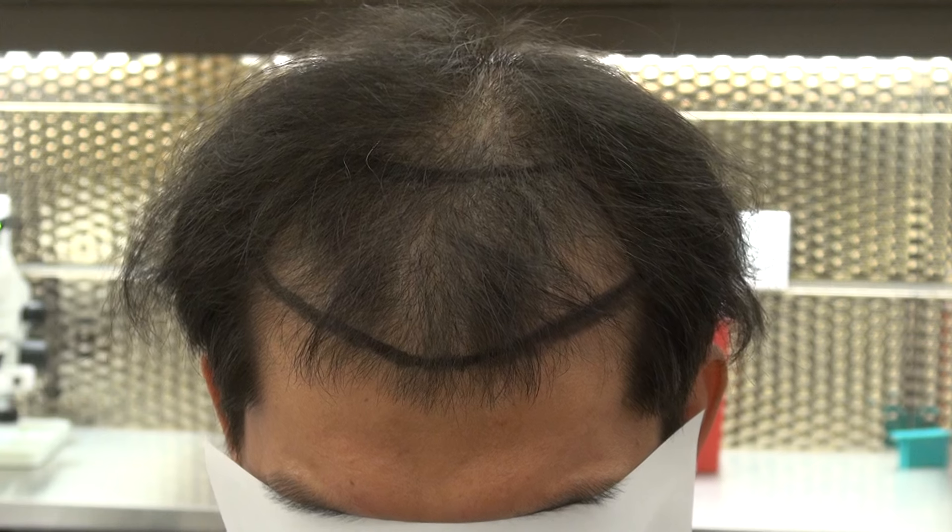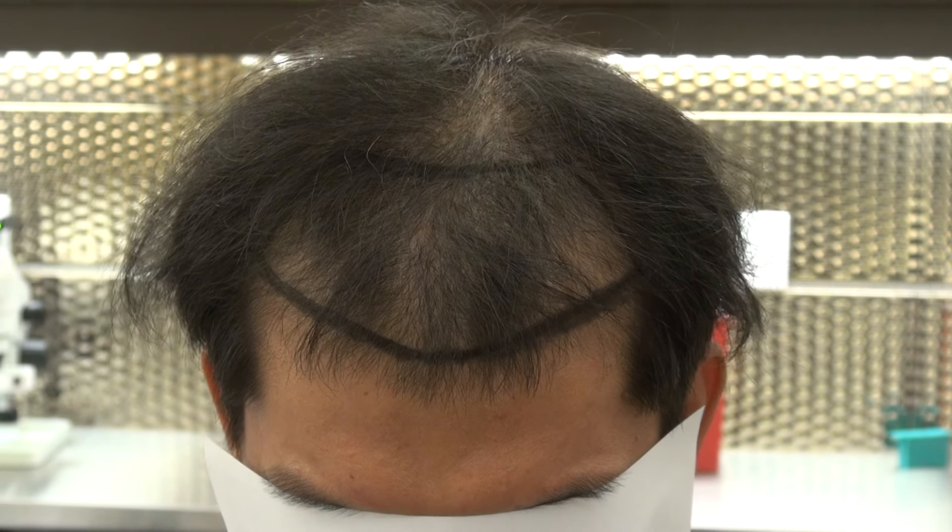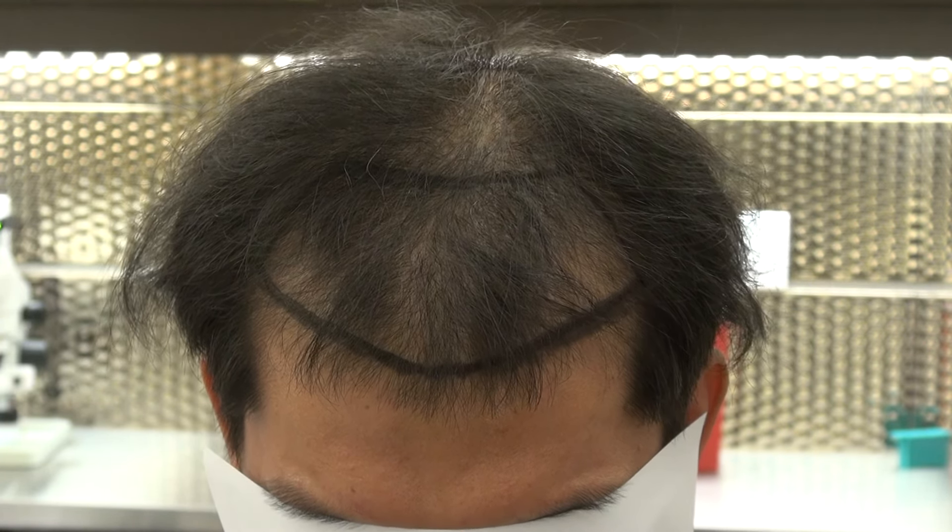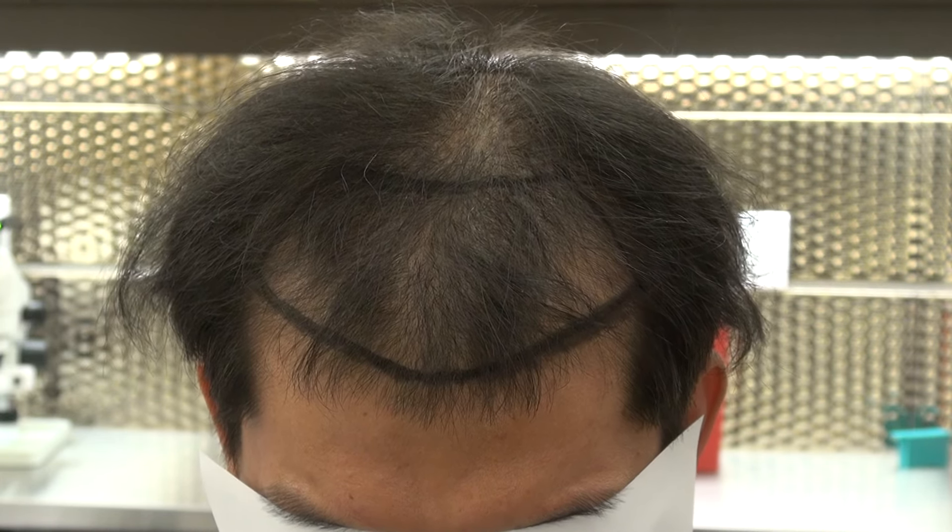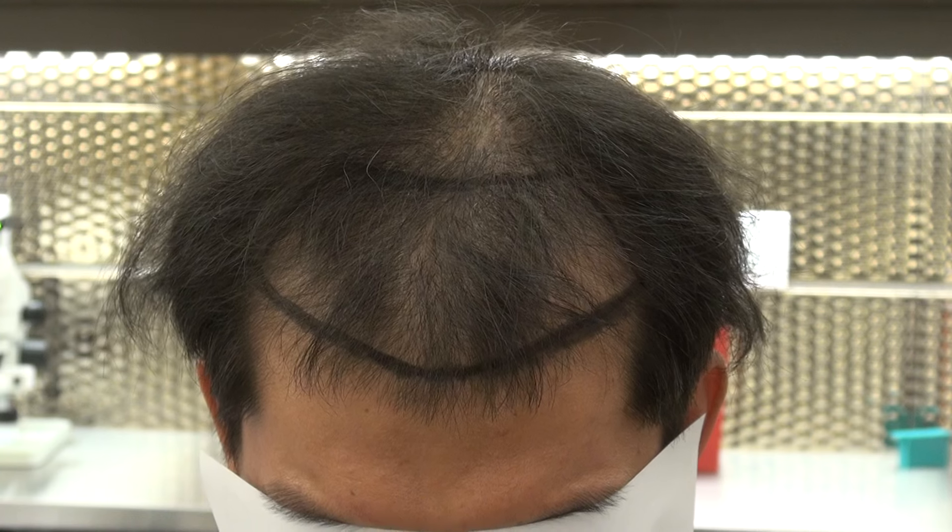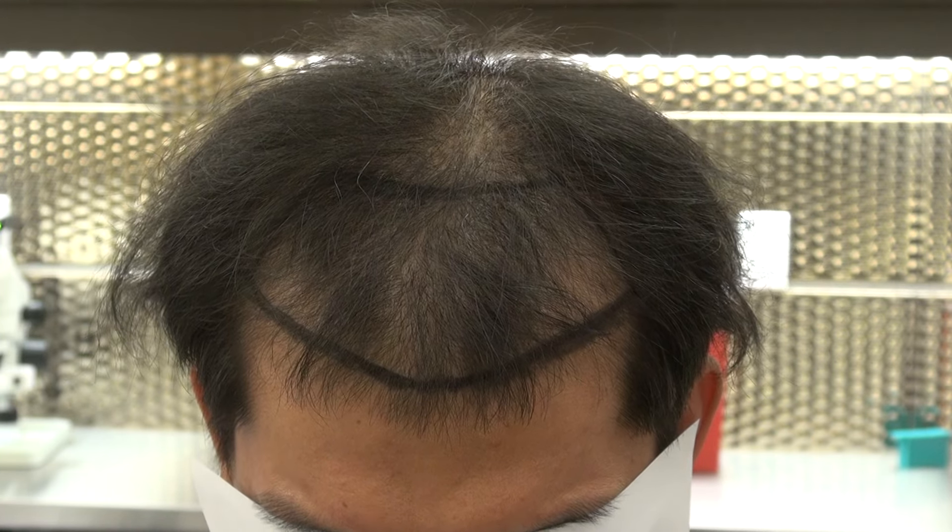We'll be harvesting using the FUE method. As you know, FUE is follicular unit extraction—harvesting one root at a time. That leaves you with minimal scarring and allows you to wear your hair shorter.